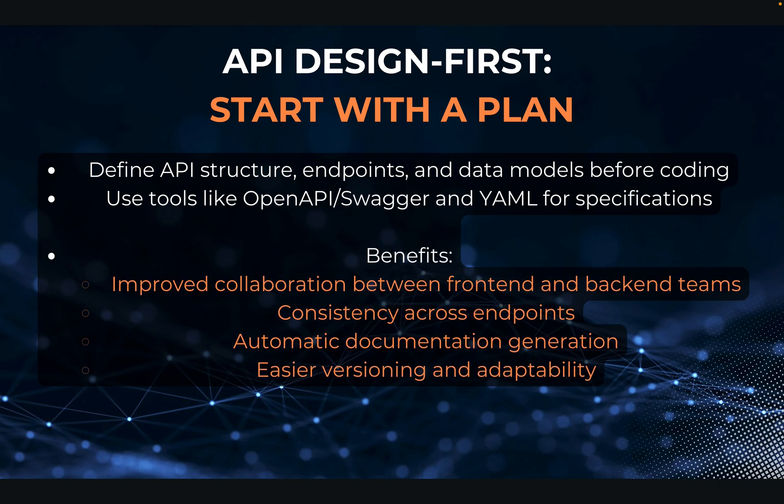First of all, API design first. Start with a plan. With the API design first approach, you think first about your endpoints, the URL path, the request parameters, the request body, the response body, and then you start coding it. You can use tools like OpenAPI or Swagger, and with a YAML file you would document or model out your endpoints, requests and responses.